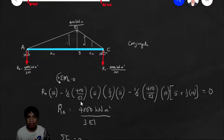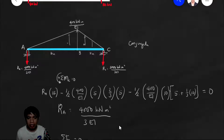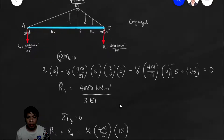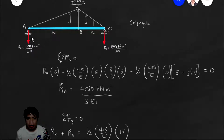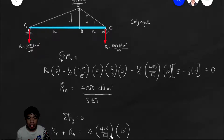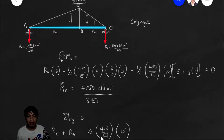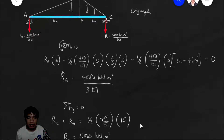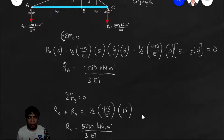Then to get R sub C, of course you can use summation of forces in Y. R sub C plus R sub A equals one-half times 400 over EI times 15, since the big shape is still a triangle. So R sub C comes out to 5,000 over 3EI.